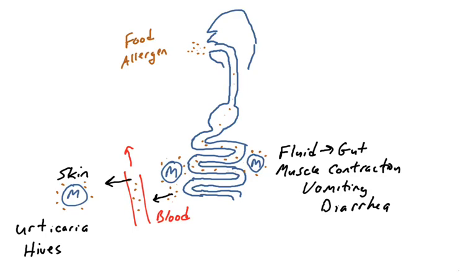How did that occur? The allergen traveled from the digestive system into the circulatory system, into the dermis, and causes mast cell degranulation.